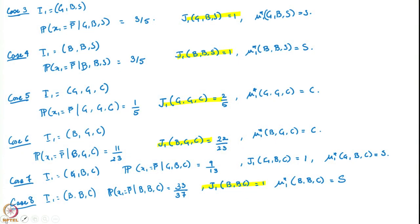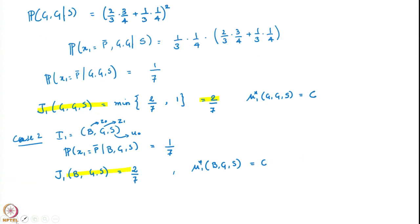Welcome everyone. In the previous example of the machine repair problem, we have seen how when we apply the dynamic programming equation or the Bellman equation to find the optimal policy and the value function, we have to actually do a number of calculations. We had just a two-step problem with only two actions and two possible states, and yet even in that problem we had to go through eight different cases just to find the value function at time step 1.